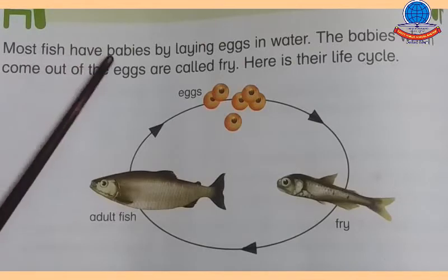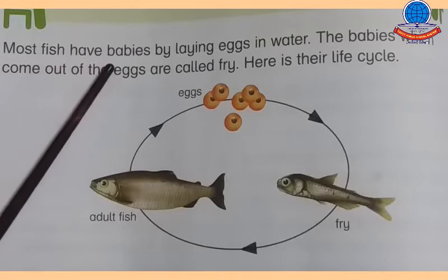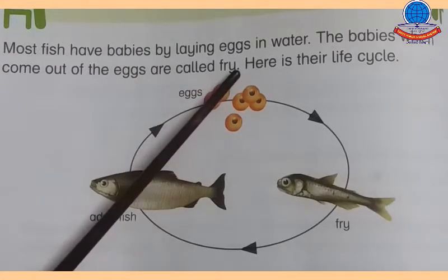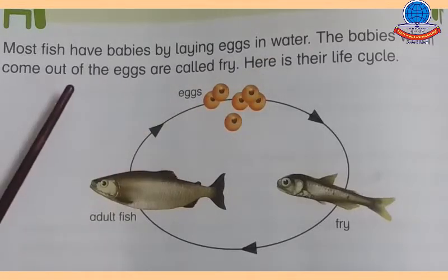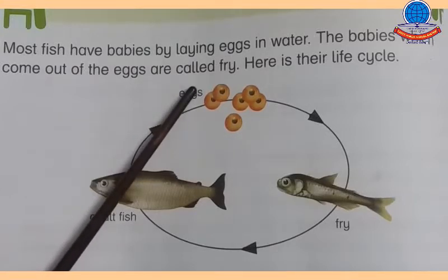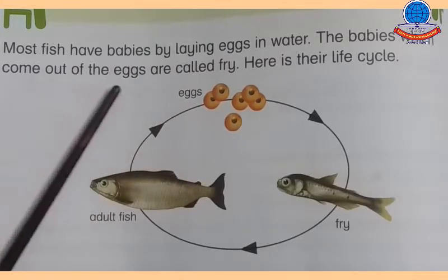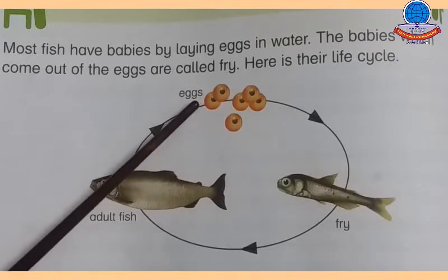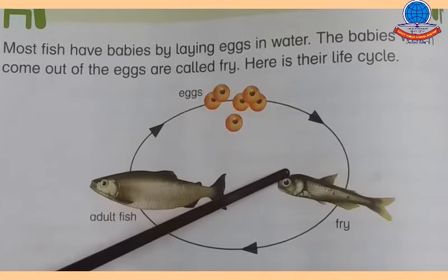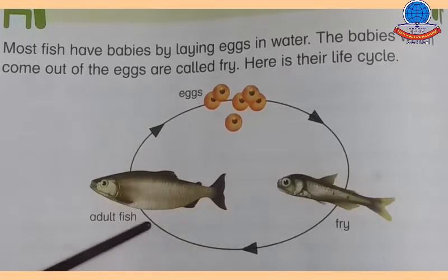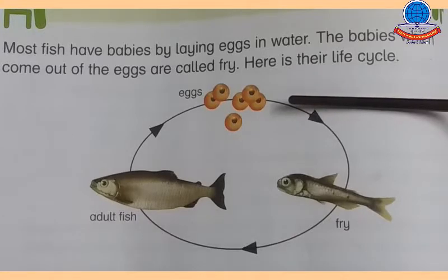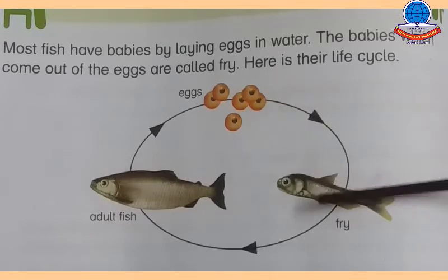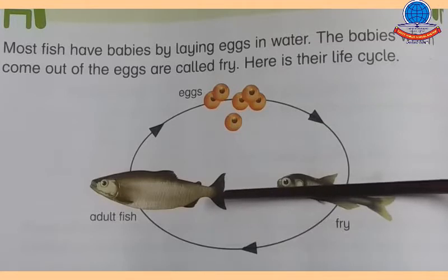Most fish have babies by laying eggs in water. The babies which come out of the eggs are called fry. Here is their life cycle: first eggs, then fry, and then adult fish. Yeh machli ka life cycle tha — eggs se fry bana aur fry ke baad ek adult fish complete ho gayi. Yeh machli ka duranian haiyaat hai.